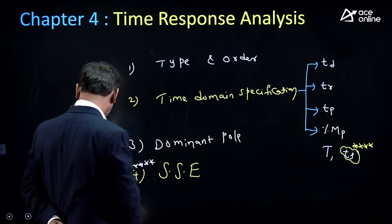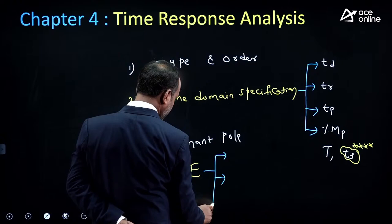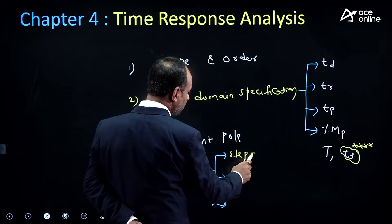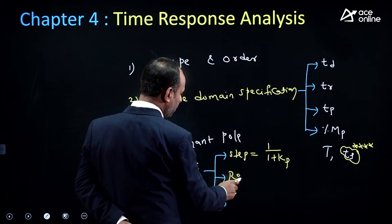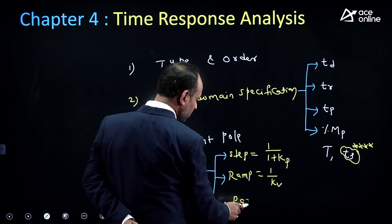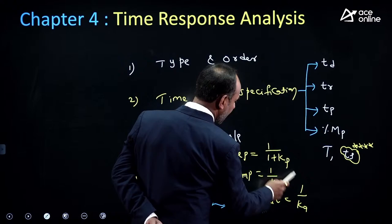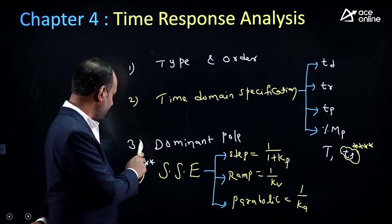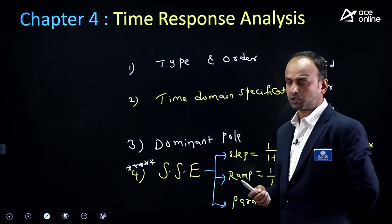Steady state error is a five-star topic. Formulas: for step input, error = 1/(1 + Kp); for ramp input, error = 1/Kv; for parabolic input, error = 1/Ka. These are the most important formulas — many exam questions come from steady state error.